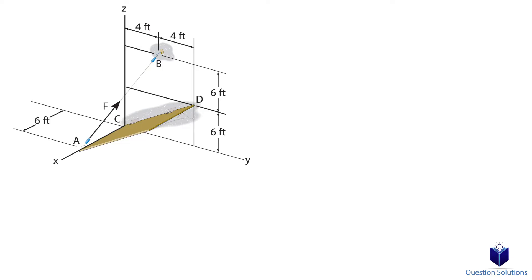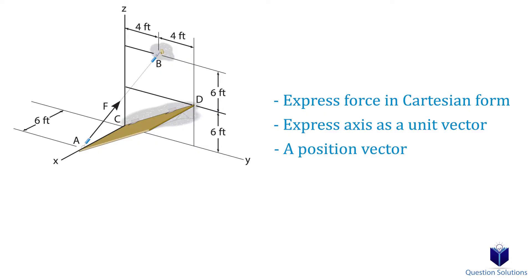As with most problems of this type, we can solve this by doing the following steps. First, we need to express the force given to us in Cartesian form. Then we need to express the axis where we calculate the moment as a unit vector. Lastly, we need a position vector from the origin to where the force begins.